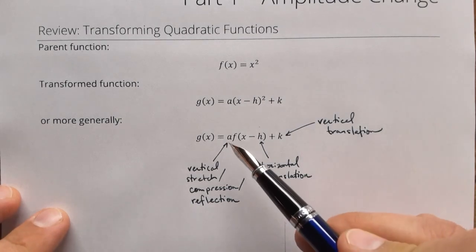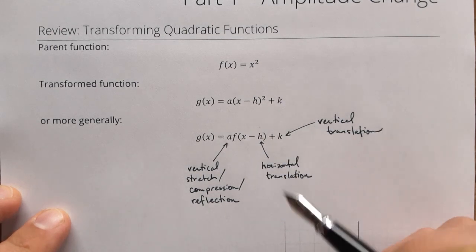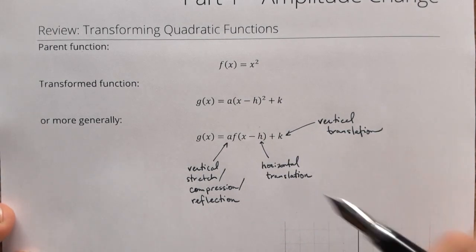Now today all we're going to do is relate to this letter a here which is a number that is multiplied by the function itself. We're going to do that with a sinusoidal function with sine or cosine.